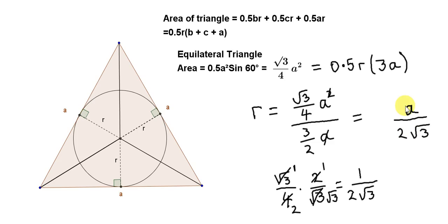So R = A/(2√3) is the radius of the incircle of an equilateral triangle. For example, if the side length A = 6, then the radius is 6/(2√3).